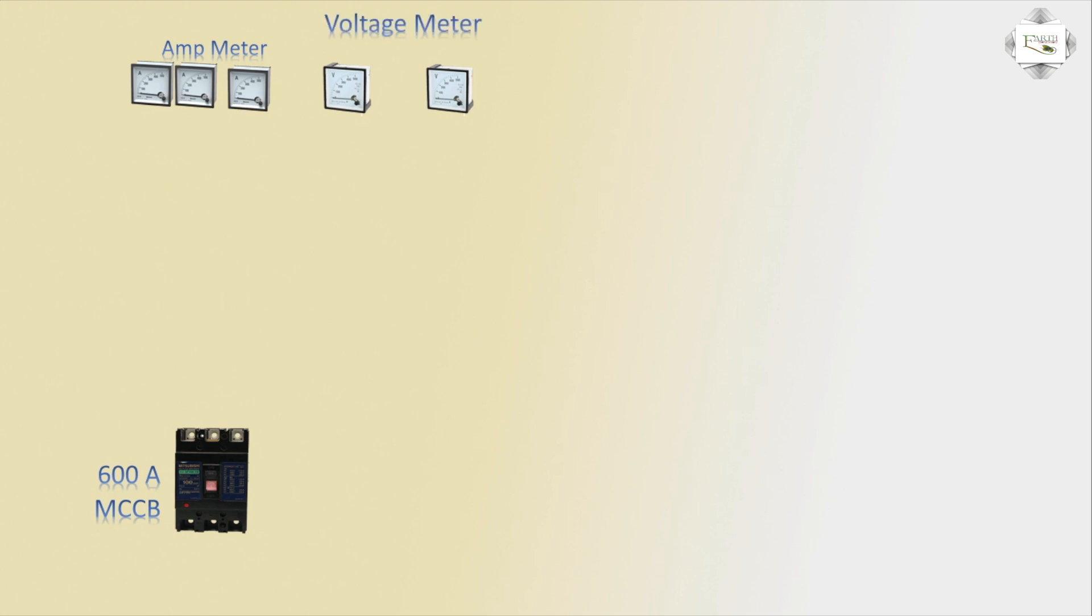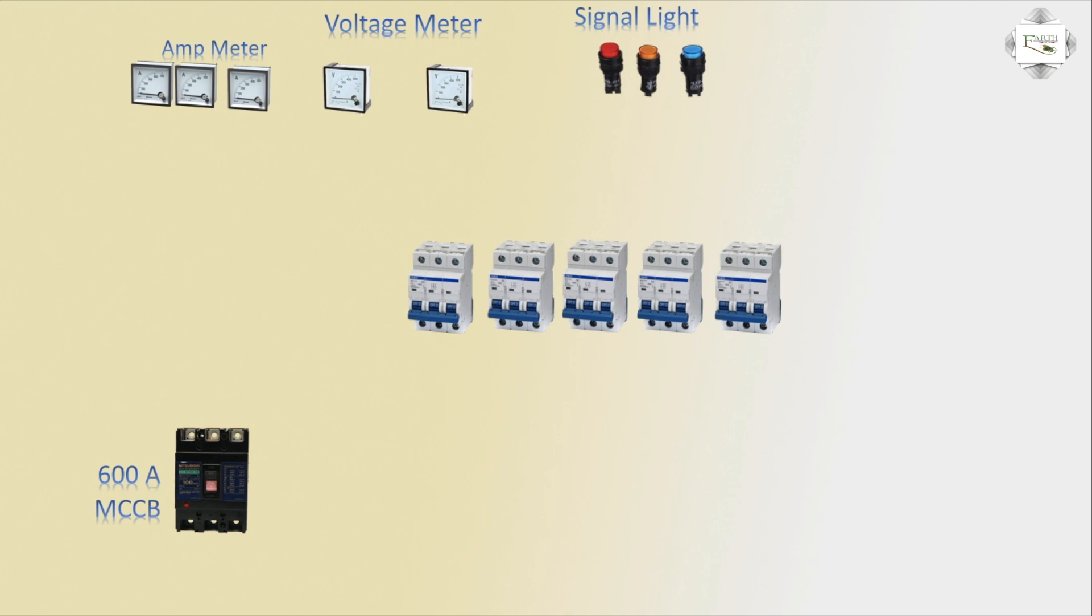The volt meter and indicator light phase, along with the 100 ampere MCB, connect to the main incoming power supply feeding to the three-phase line outgoing to the electrical bus bar connection.